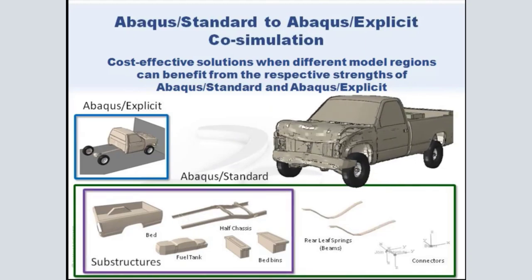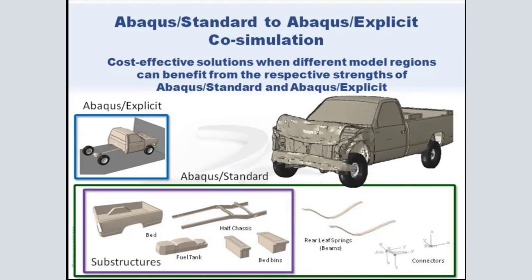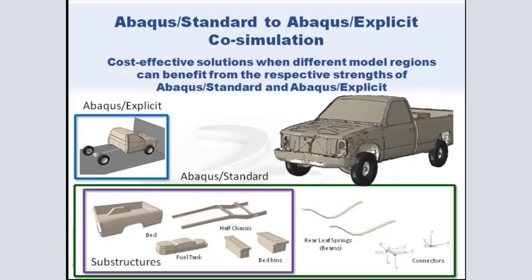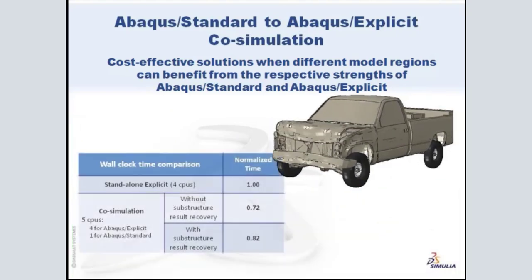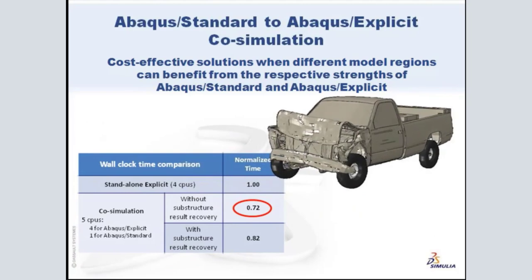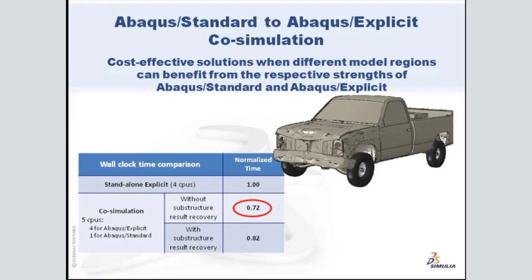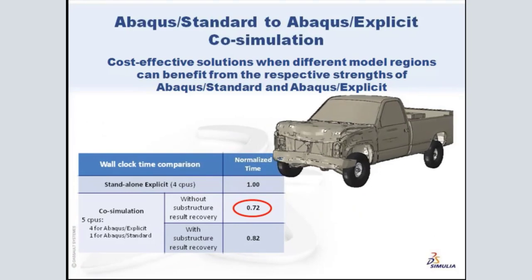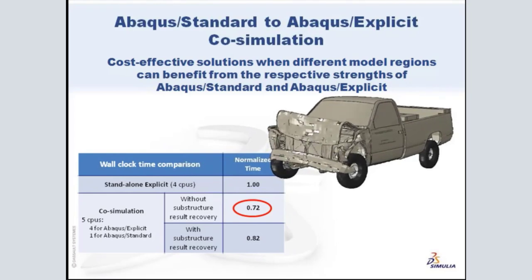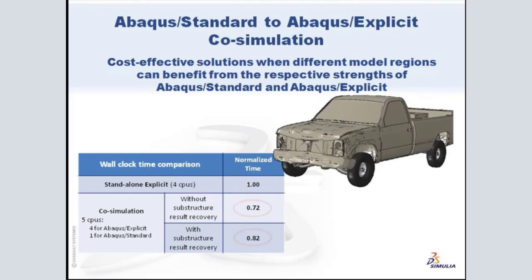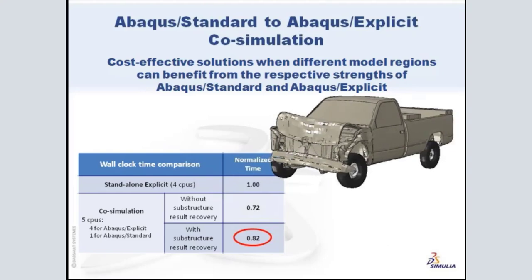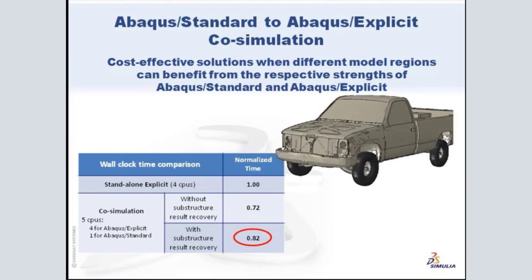These components are most efficiently modeled with Abacus Standard. To improve performance even further, some of the Abacus Standard structures are modeled as substructures. More than one-quarter of the runtime for this analysis is saved by using the co-simulation technique rather than analyzing the entire truck with Abacus Explicit. The savings is a bit less if detailed results are extracted from the substructures.